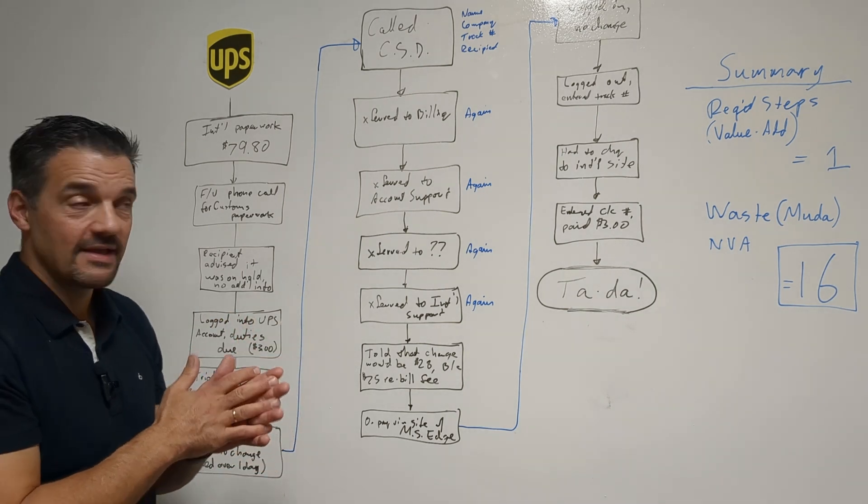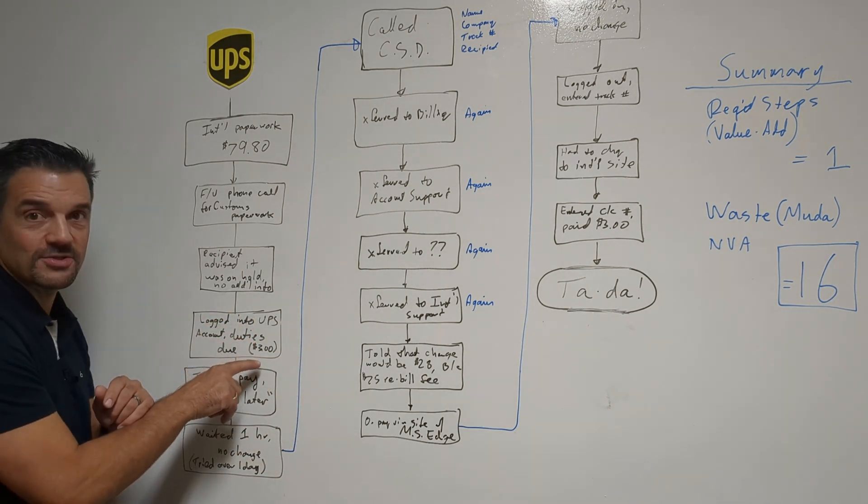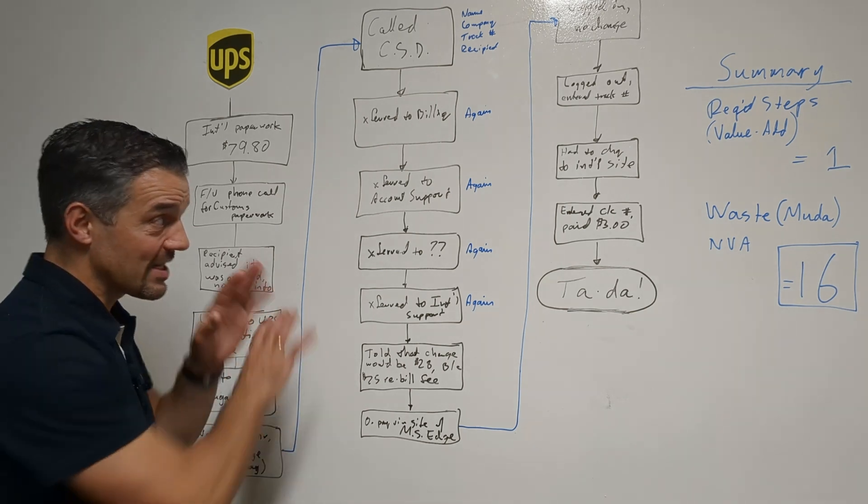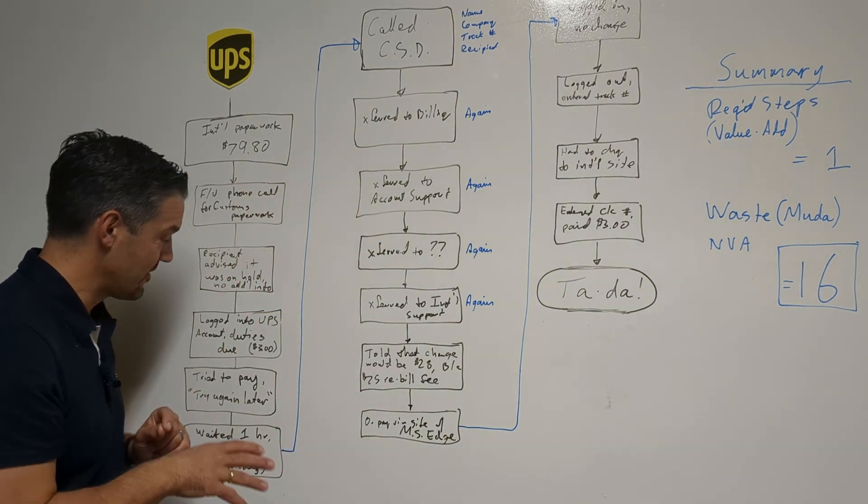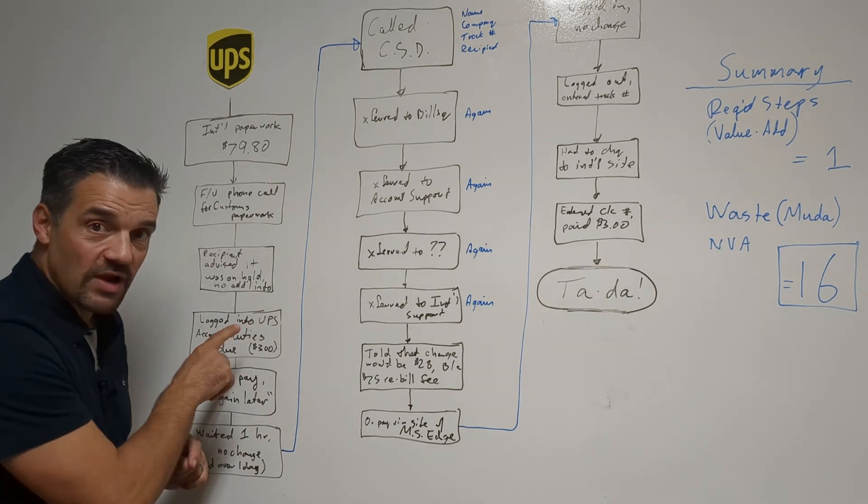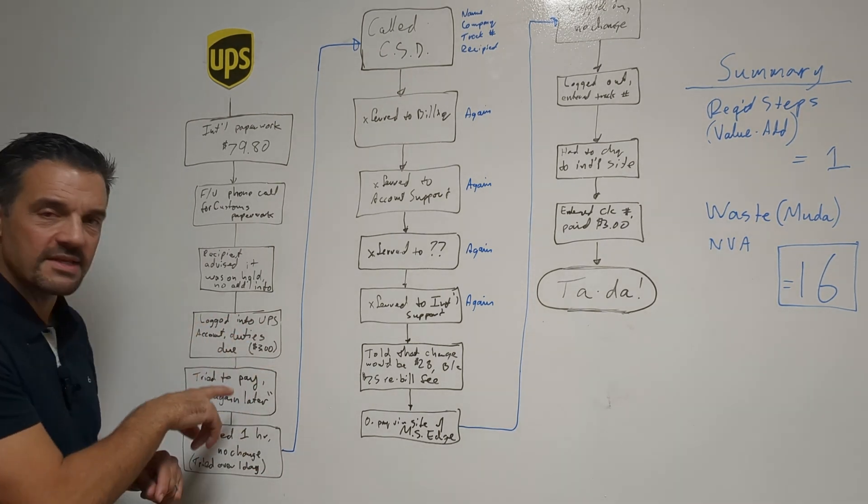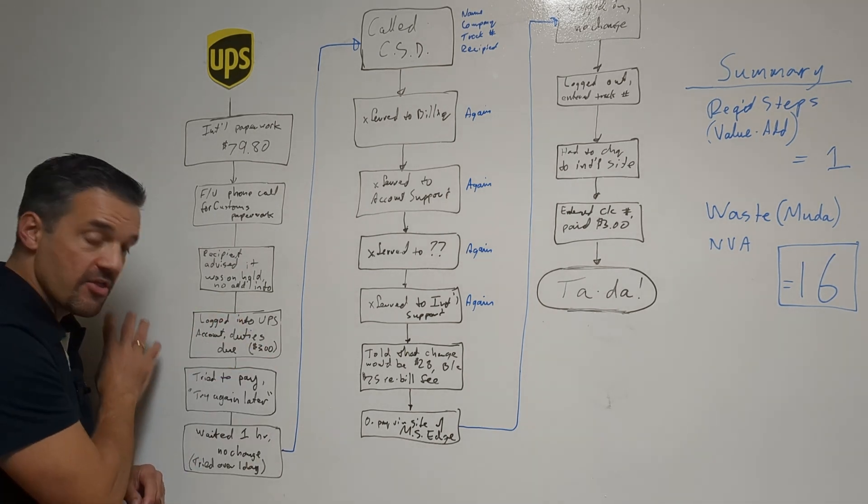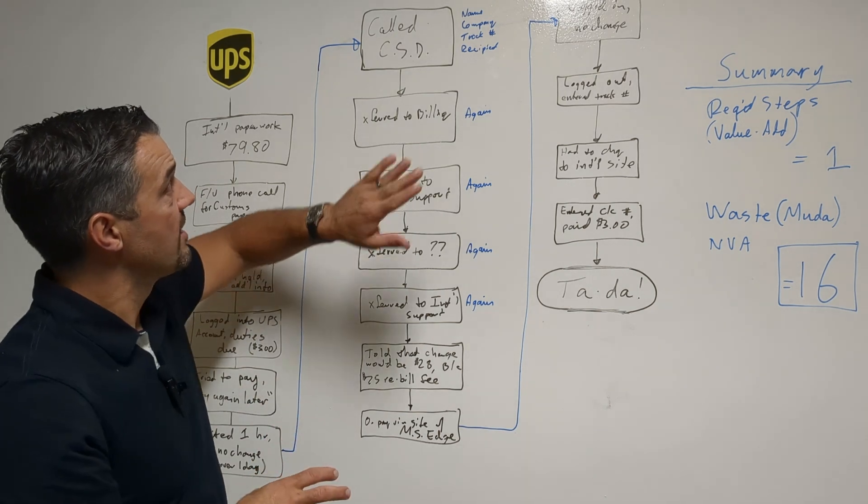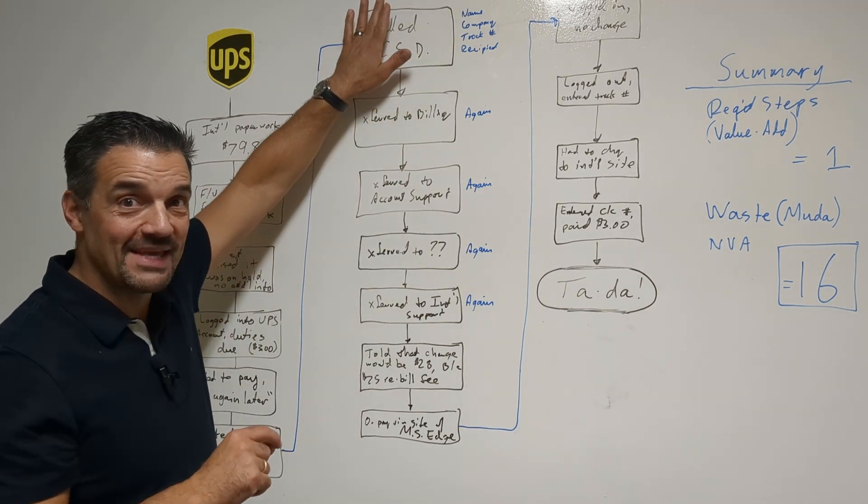So we log in, we look, and it turns out it's on hold because there's a customs duty or customs fee due. This amount is three dollars. Three dollars, you guys. So recognize all of this is literally over three dollars. So I go ahead and try and pay it from that email - it doesn't come through, keep getting an error saying try again later.